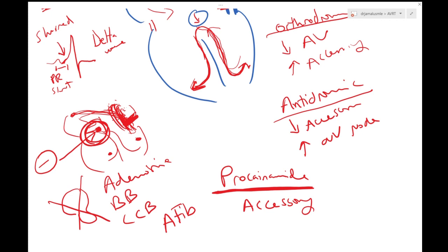So again, medications that you should never use in WPW: adenosine, beta blockers, and calcium channel blockers. But the medication that you should use is procainamide because it inhibits the accessory pathway rather than the AV node.